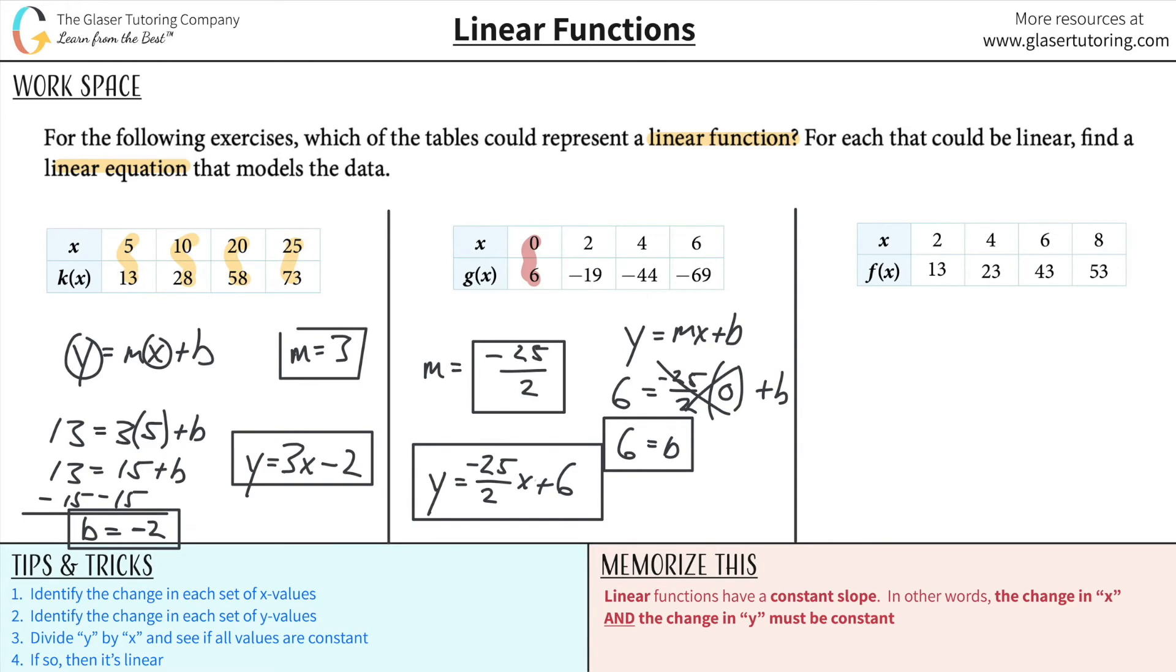Last but not least. Let's identify the changes. This is going to be 2, this is going to be 2, and this is going to be 2. So we better anticipate having the same changes on the bottom. 13 to 23 is 10. 23 to 43 is 20. And then 43 to 53 is 10. They tried to trick me here. What's the problem? When you divide the 10 by the 2, that's going to be 5. But this is going to be 10. And that's 5. Since the slope is not consistent, it's not linear.